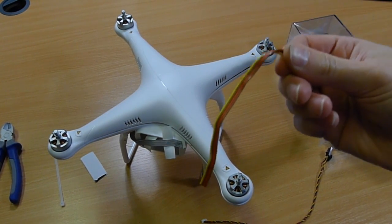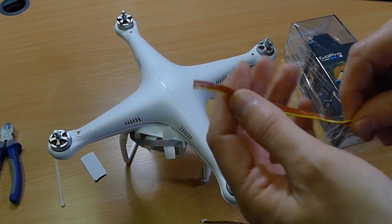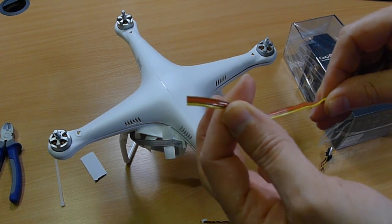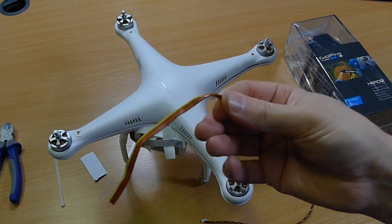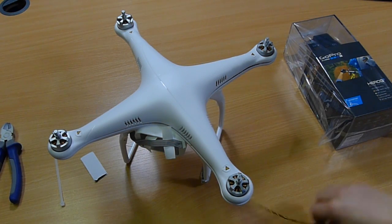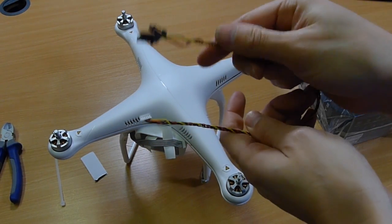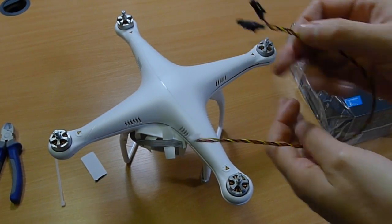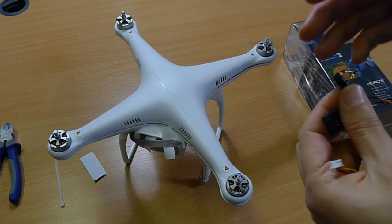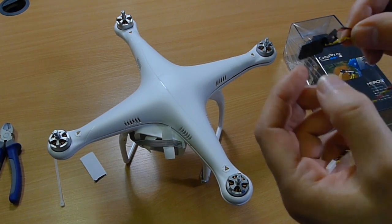All we're going to do to make this compatible with an Immersion RC and make it fully plug and play rather than just some bare wires is first of all we're going to remove that, I've already done it on this one, and then replace it with this plug and play cable from our website which has the correct connector on that end for connecting to the Phantom and it will take the video coming out of the Zenmuse out of your GoPro.